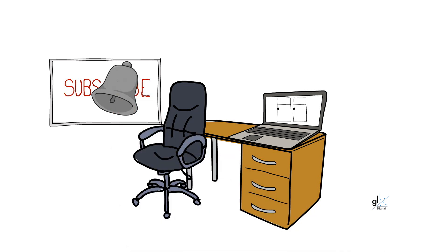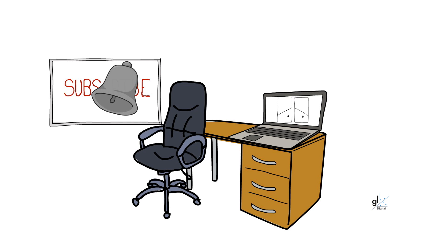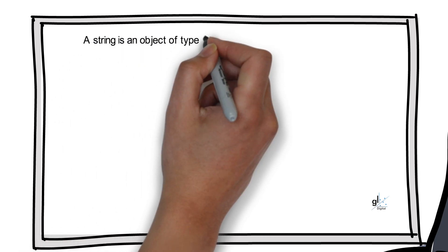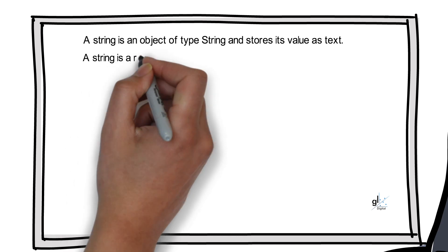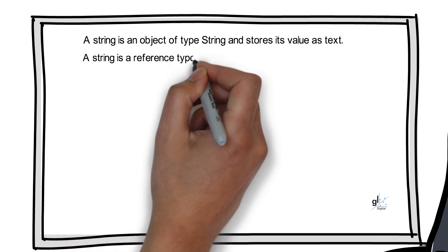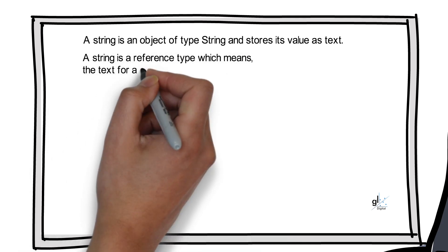Right, let's launch into it. A string is an object of type string and stores its value as text. A string is a reference type, which means the text for a string is stored in a memory location called the heap.